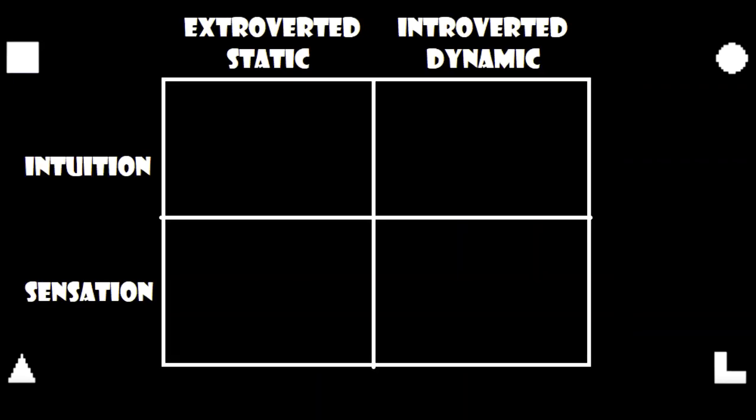If we take these two approaches, static extroversion and dynamic introversion, and apply them to intuition and sensation, we get four of the most basic and fundamental building blocks of socionics. These would be information metabolism elements.